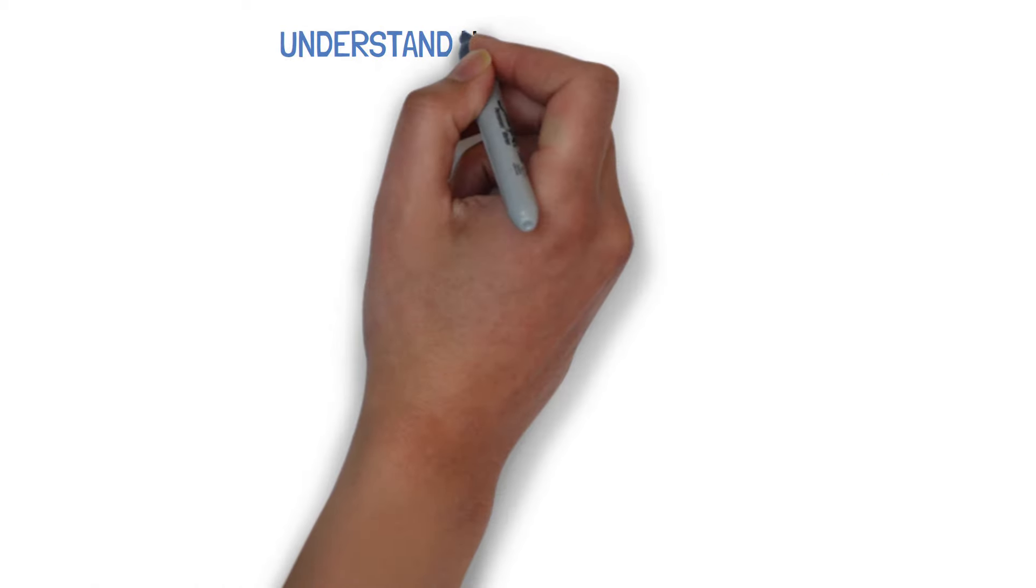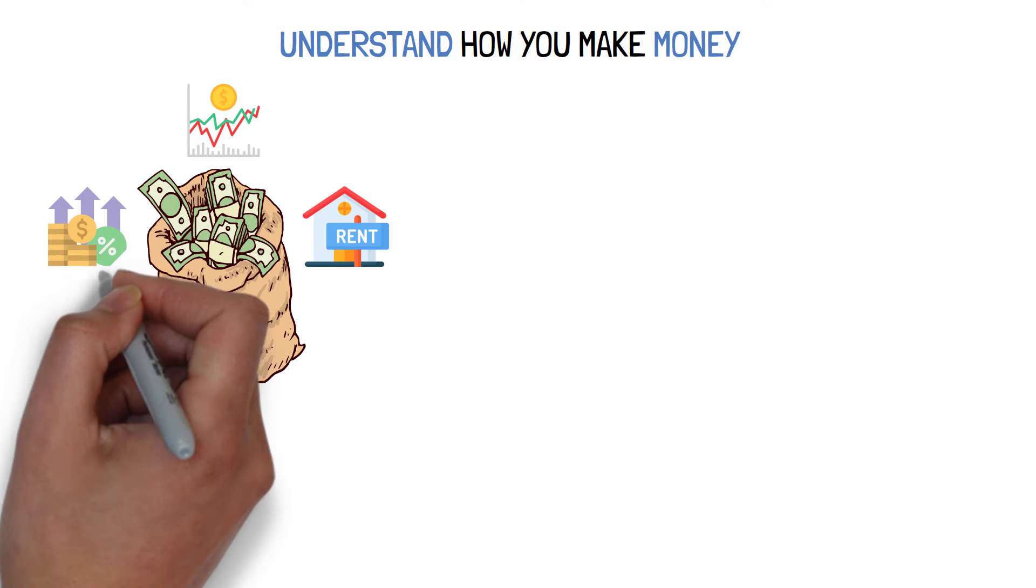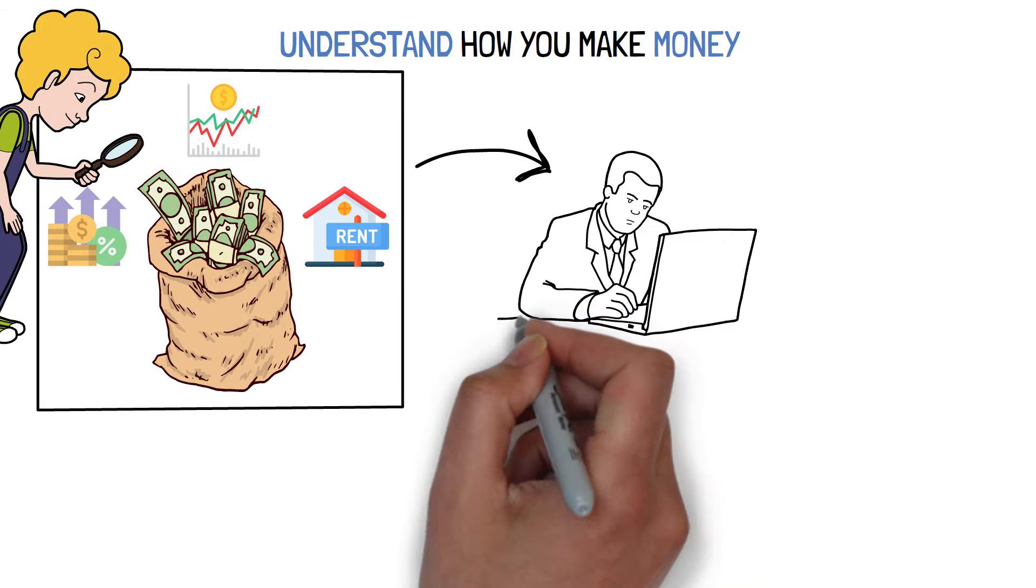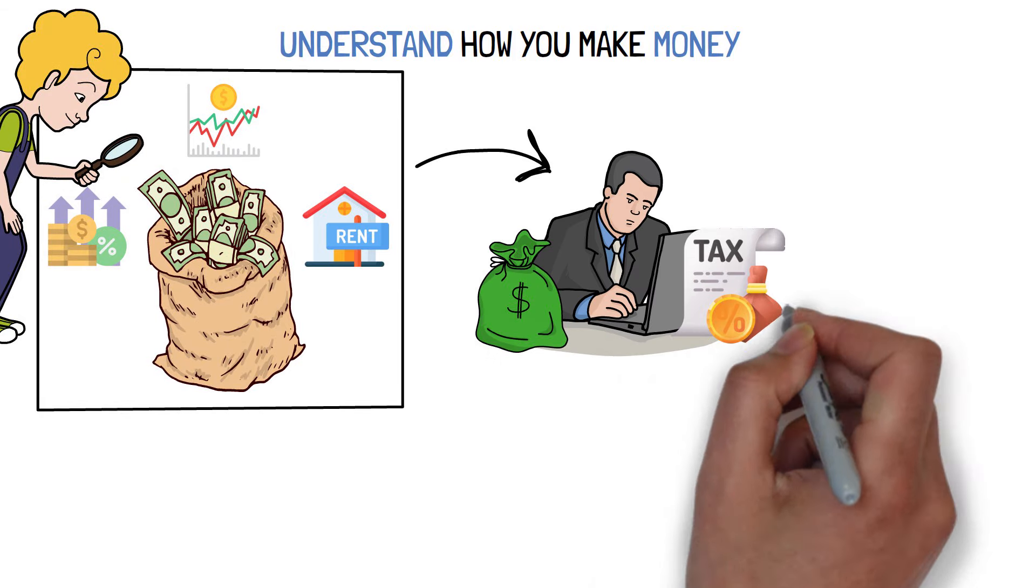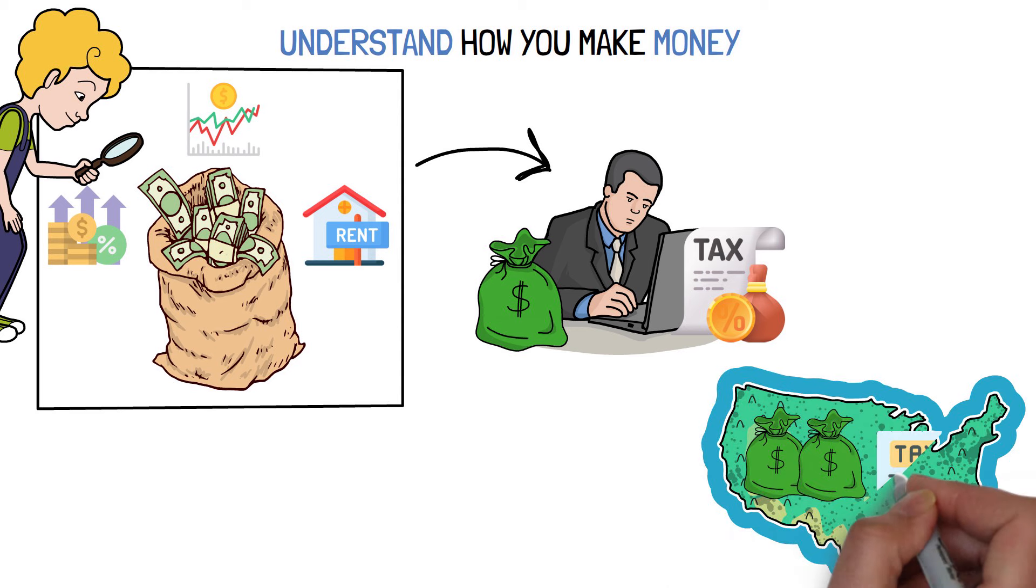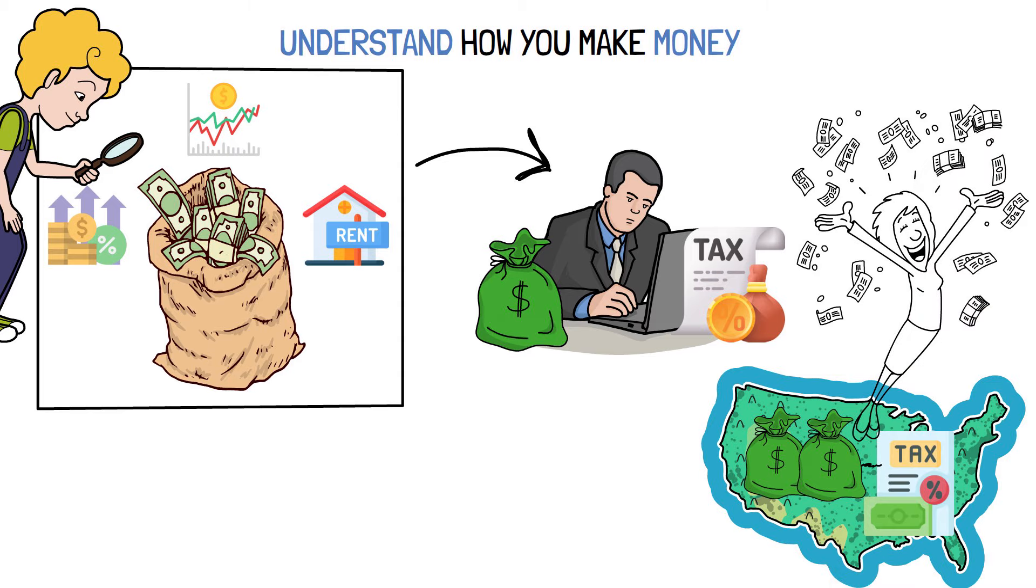Understand how you make money. Income can be earned in a variety of ways, but everyone should be aware of the sort they earn. The various ways people make money have vastly varied tax ramifications. In the United States, earned income or salaries are taxed more than any other sort of income, making it an inefficient means to accumulate wealth.